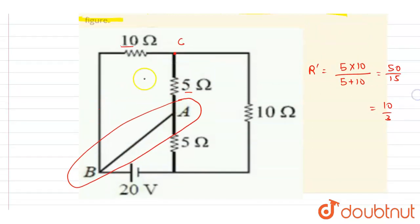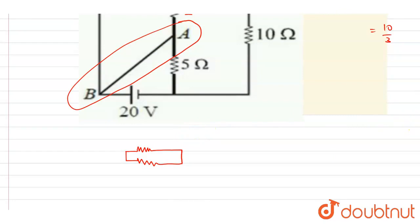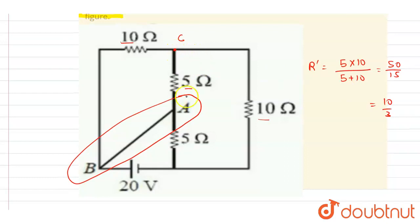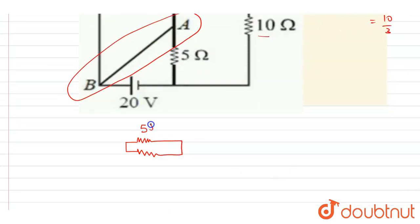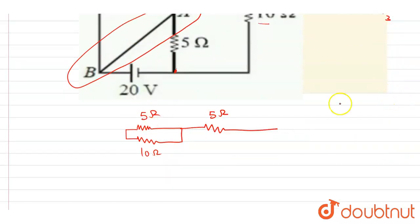So now we connect them in parallel and the equivalent resistance is 10/3 ohms. Drawing another diagram: the 5 ohm and 10 ohm are connected in parallel. This 10 ohm is connected between A and C, and this 5 ohm is connected at the end. These two ends are then connected by a resistance of 10 ohm.